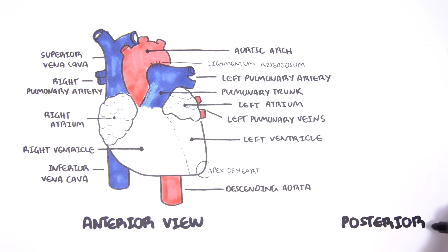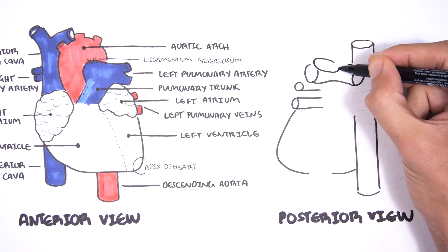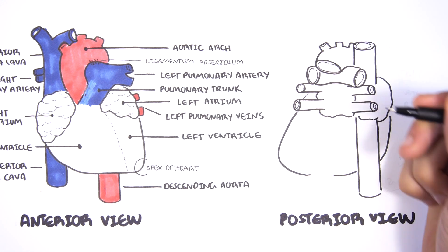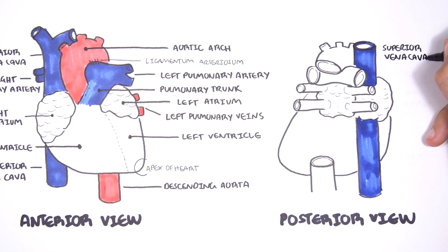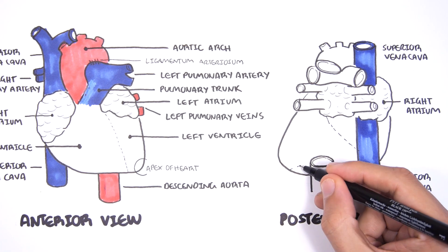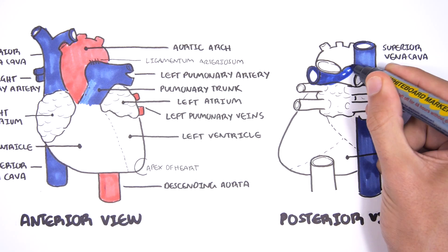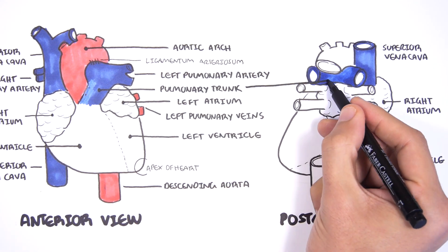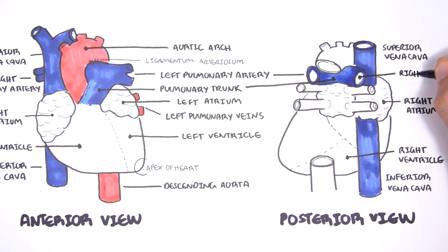Let us look at the posterior view. Here again is the superior vena cava and the inferior vena cava, which bring deoxygenated blood back to the right side of the heart, to the right atrium, then to the right ventricle. The right ventricle then pumps the blood up through the pulmonary trunk, which bifurcates into the left and right pulmonary arteries.